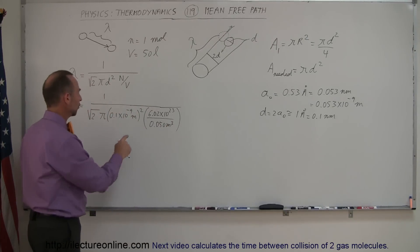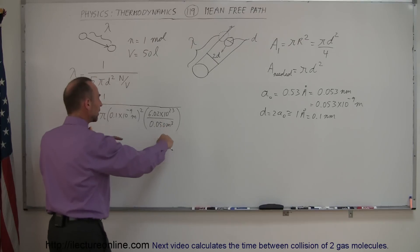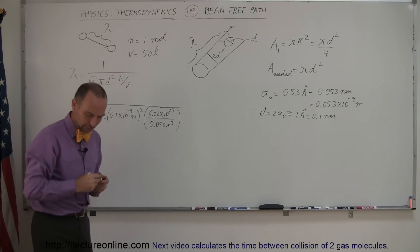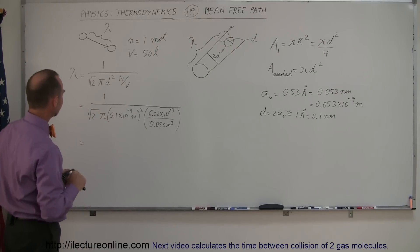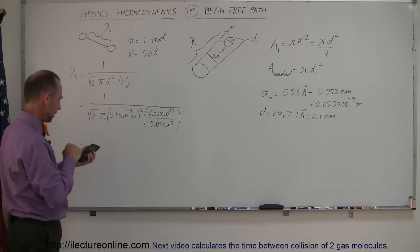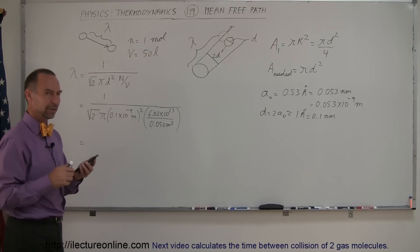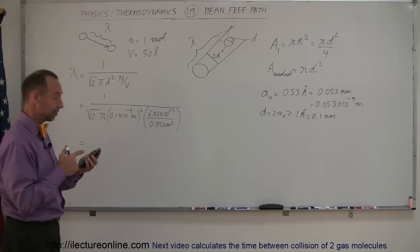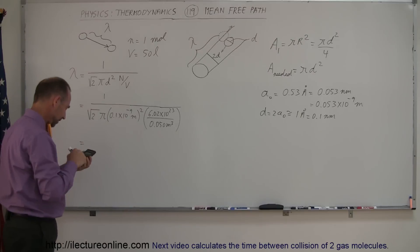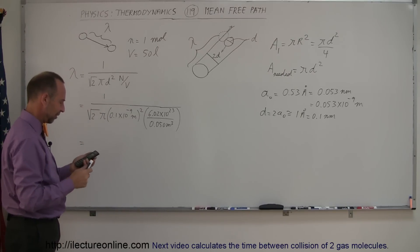So notice we have meters squared divided by meters cubed in the denominator, which will give us a unit of meters, and now I need my calculator. So square root of 2 times π times 0.1 e to the 9 minus, and we have to square that, times 6.02 e to the 23rd, and then divide by 0.05 equals... I was afraid here that I got the wrong answer, but I still have to take the inverse because it's 1 over that. So take the inverse of that, and that's much better.